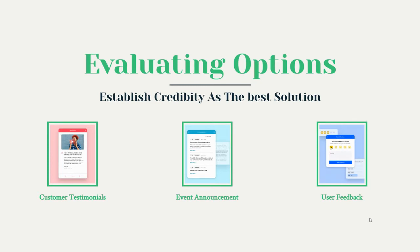Once visitors have the information and feel informed enough to make a decision, they're trying to figure out which option to go with. That might be a competitor or a completely different direction. Once someone has the information, you're trying to present yourself as the best solution. We've got three tools for that: customer testimonials, our event announcement tool, and our user feedback tool.